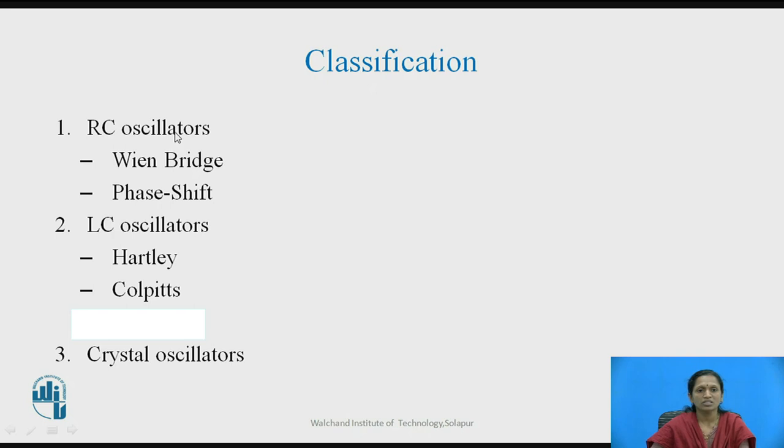Broadly, oscillator circuits are classified into sinusoidal oscillators and non-sinusoidal oscillators. Sinusoidal oscillators can be developed with RC circuits, LC circuits, and crystal oscillator circuits. RC oscillators are also known as audio oscillators because they range from 20 Hz to 20 kHz frequency. For that, we have two types: Wien bridge oscillator and phase shift oscillator.